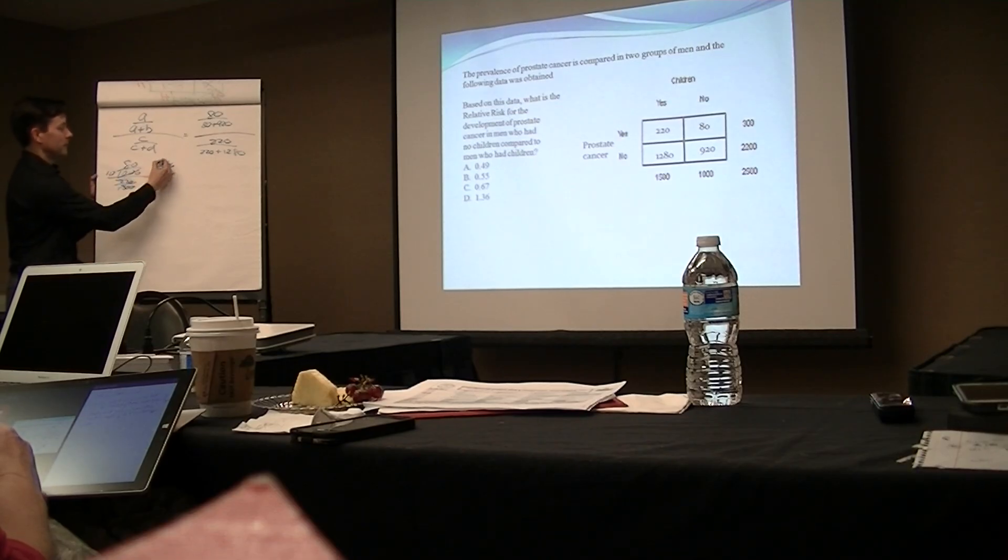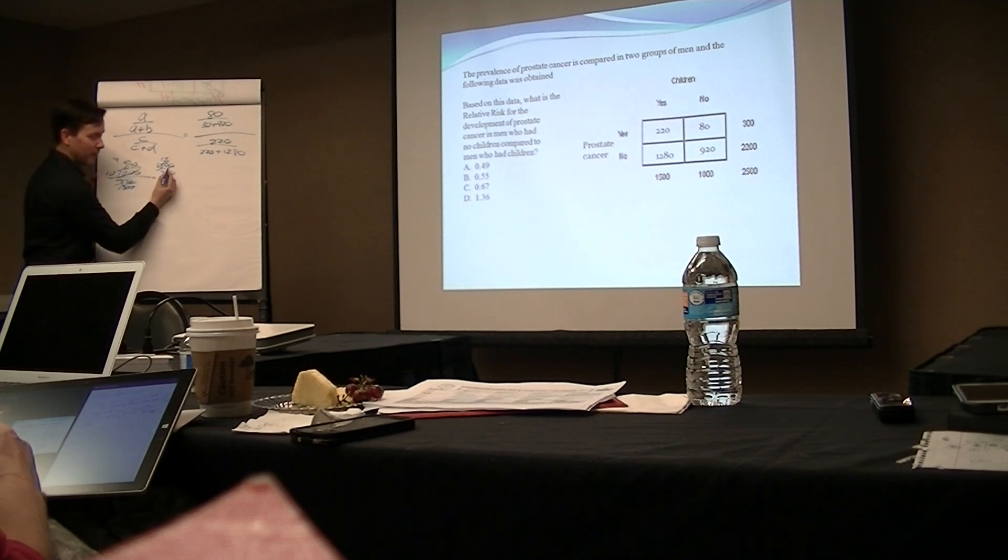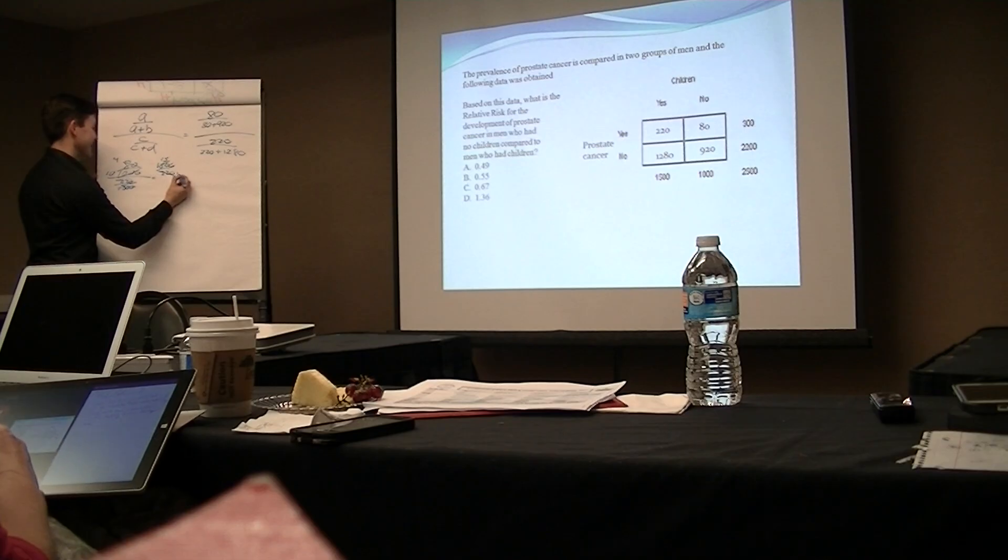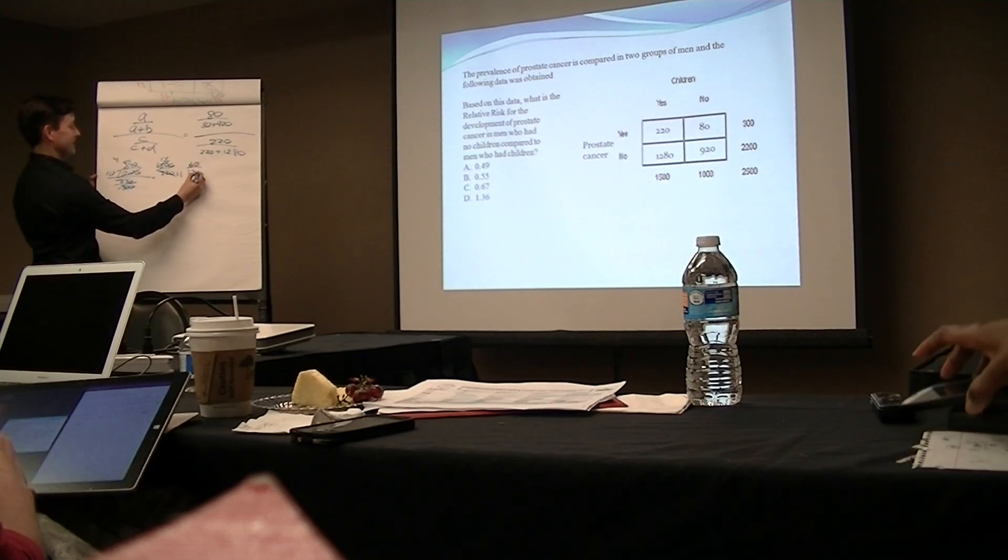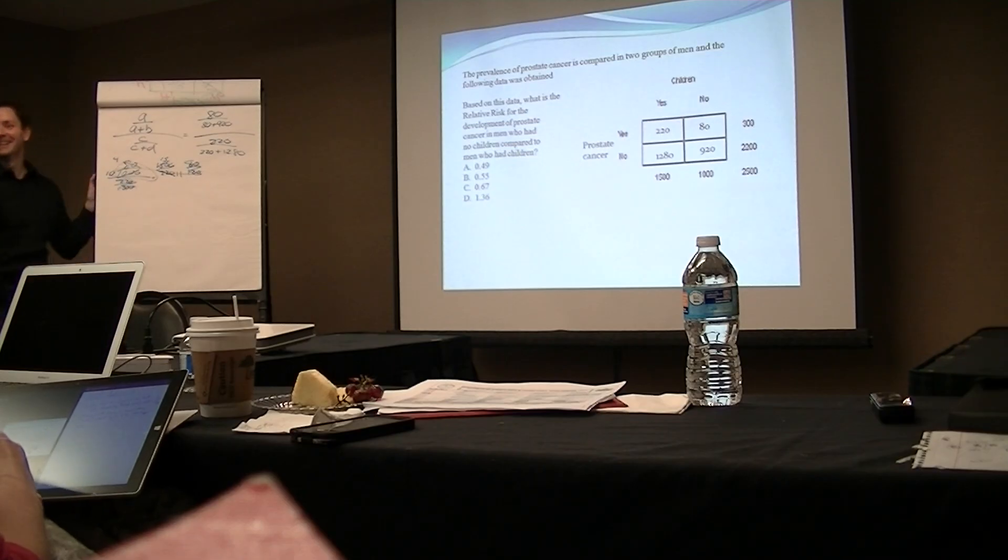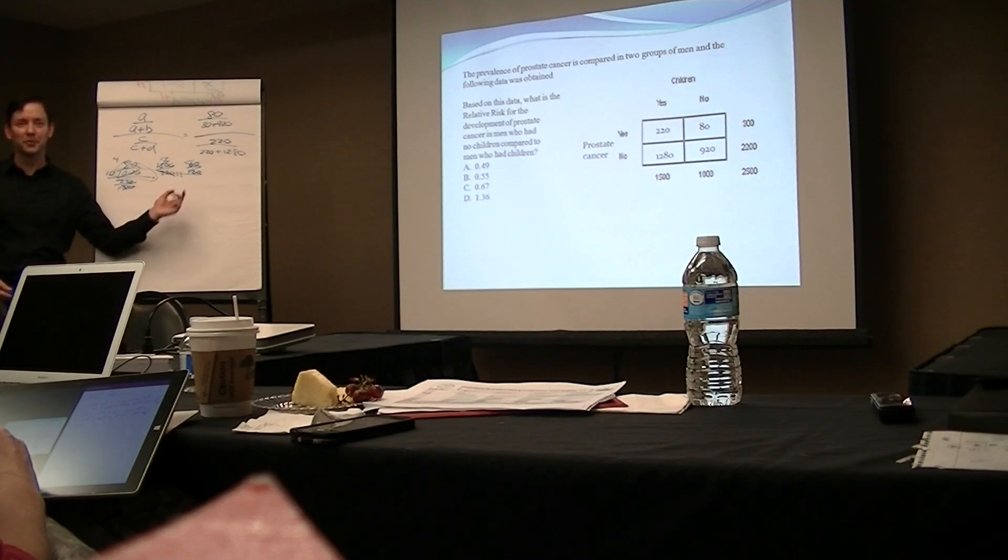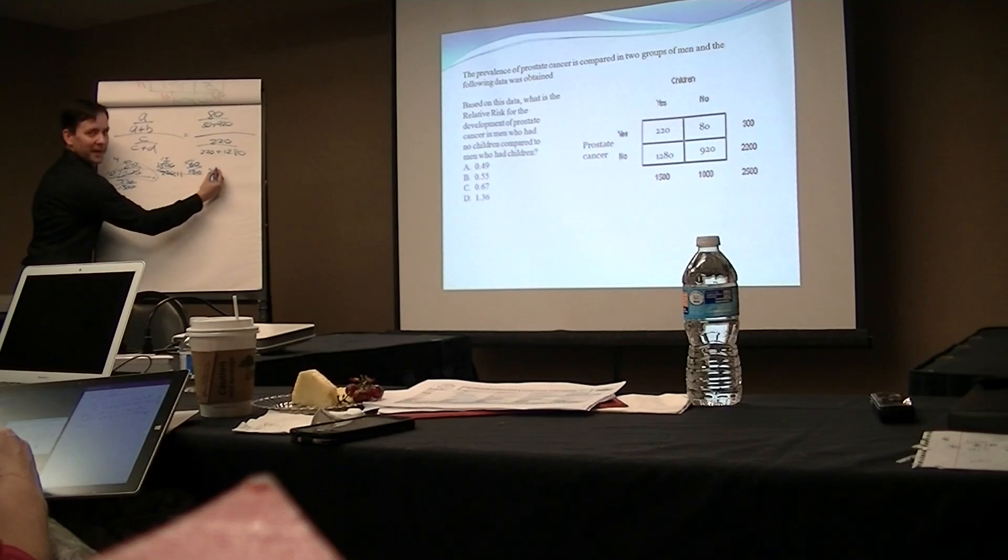Anybody got a calculator? 8 over 100, 0.55. B, 0.55, yes, we would have it, we would have been close, ballpark.